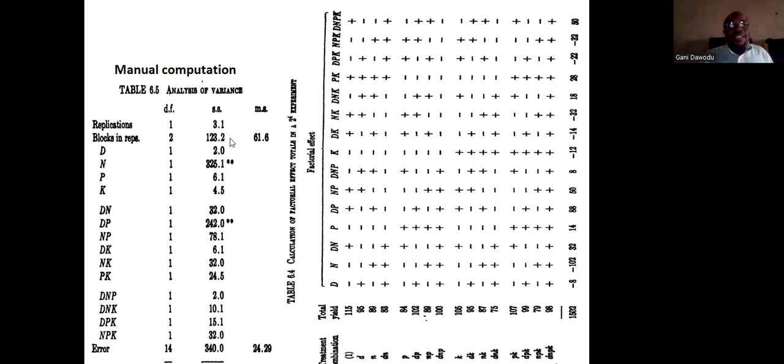R will put the fact that DNPK is confounded in blocks in the output. The fact that we have blocks in rep to have degrees of freedom 2 will affect the error degrees of freedom. Because if we know and implement the fact that the DNPK is confounded, then this also will be 1, and the error degrees of freedom would be 15. And again, the excess or shortage from here would affect the sum of squares for error. Let's now see what R has for us concerning this.